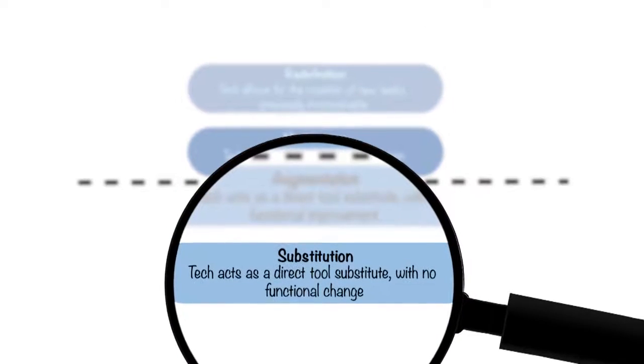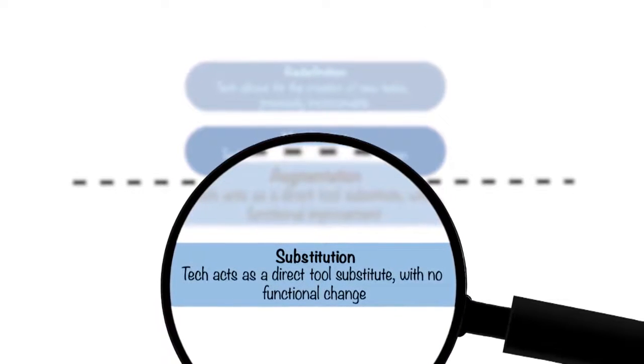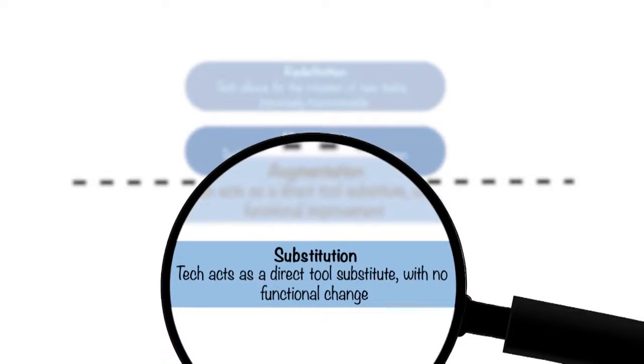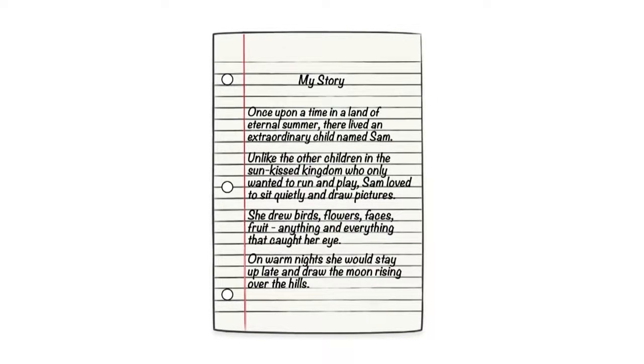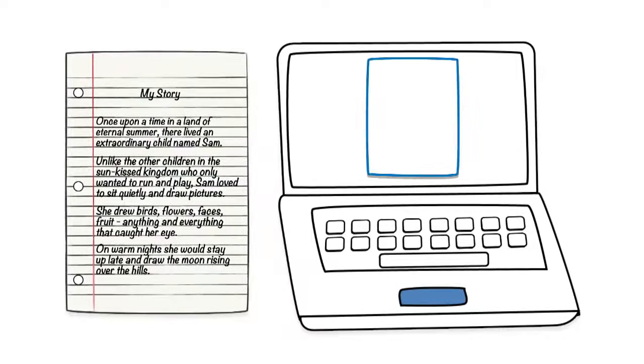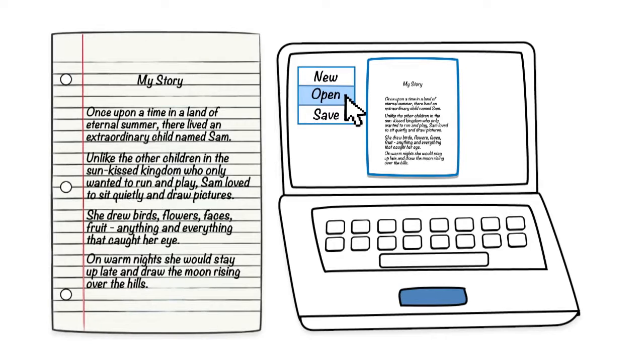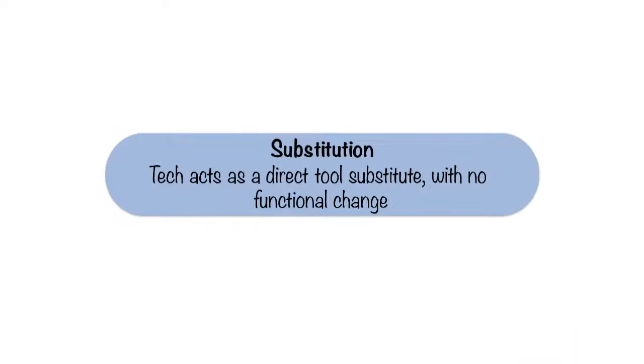In substitution, technology acts as a direct tool substitute with no real functional change to the task. For example, take creative writing. What if you had students write a story using a word processing program? In this case, students are substituting a handwritten story for a typed story. The task is the same with no real change in student engagement.